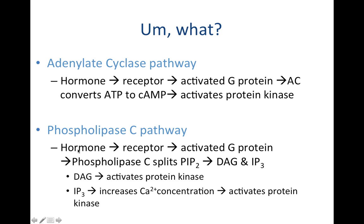For the phospholipase C pathway: your neurotransmitter activates your receptor, which can then activate your G-protein. Phospholipase C can then cleave PIP2 into DAG and IP3 — these are going to be your second messengers. DAG's job is to activate your protein kinase, so you can activate proteins by adding a phosphate group. IP3 is going to cause release of calcium, which can then cause activation of your protein kinases. Calcium here, in this pathway, is going to be your third messenger.